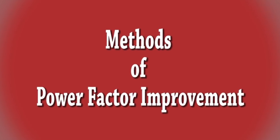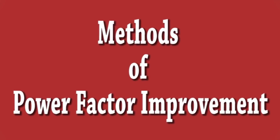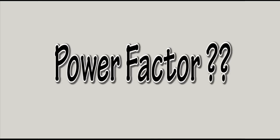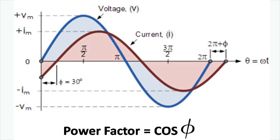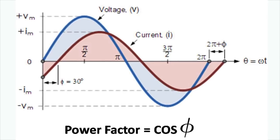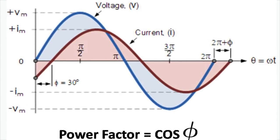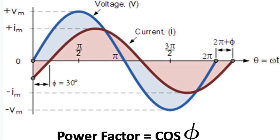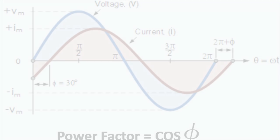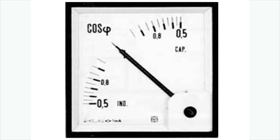In this video we will be learning about power factor improvement methods. The term power factor comes into the picture in AC circuits only. Mathematically, it is the cosine of the phase difference between the source voltage and current. It refers to the fraction of total apparent power which is utilized to do useful work, called active power.